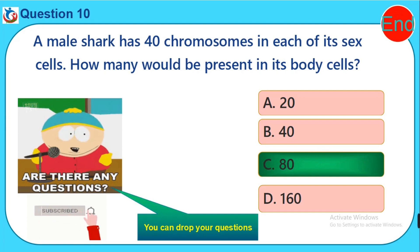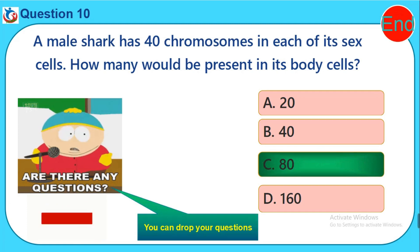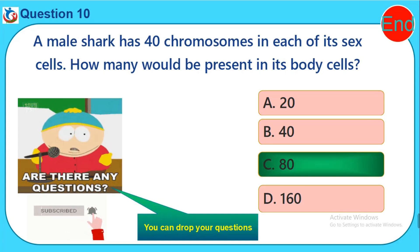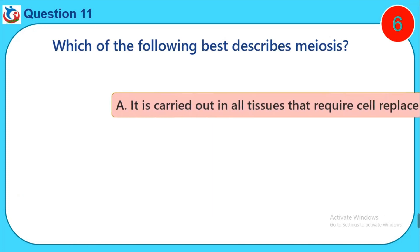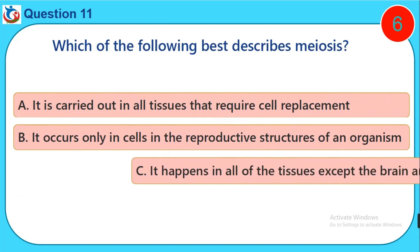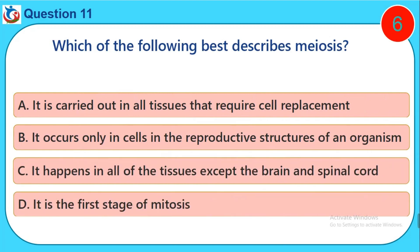Please like this video, subscribe to this channel, and click the bell button — it's totally free. Do not forget to drop your comment in the comment section. Question eleven: Which of the following best describes meiosis? A) It is carried out in all tissues that require cell replacement, B) It occurs only in cells in the reproductive structures of an organism, C) It happens in all of the tissues except the brain and spinal cord, D) It is the first stage of mitosis.